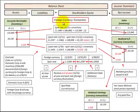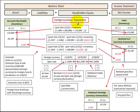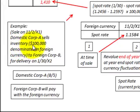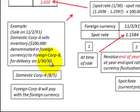Here we're going to be looking at a foreign currency transaction. This is where a domestic corporation either buys or sells a product to a foreign corporation, and then the foreign corporation pays for this product based on their foreign currency. For our example, we're looking at a sale on 11-2 of year 1 where domestic corporation A sells inventory worth $100,000, denominated in a foreign currency to foreign corporation B, with delivery on 1-30 of year 2.